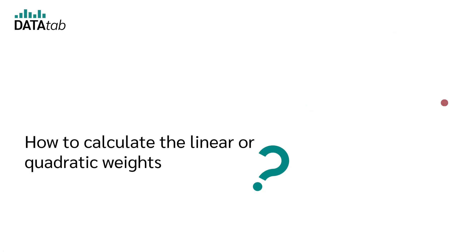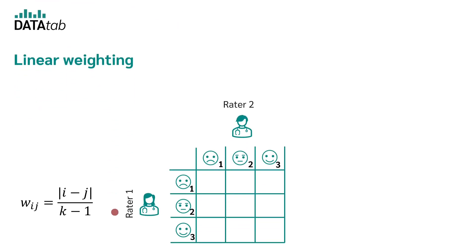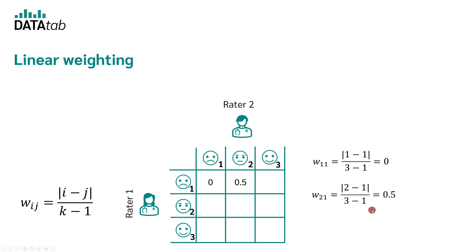All that is needed now is the weighting matrix. If we did not use any weighting at all, our matrix would look like this: if both raters answered the same, there is 0 in the cells; otherwise it is 1, regardless of how far apart the raters answered. Now let's look at linear and quadratic weighting. The linear weighting matrix is calculated with a formula where I is the row index, J is the column index, and K is the number of categories — in our case 3. For the first cell, we get 1 minus 1 divided by 2, which equals 0. For another cell, we get 2 minus 1 divided by 2, which equals 0.5. And for another, 3 minus 1 divided by 2, which equals 1.